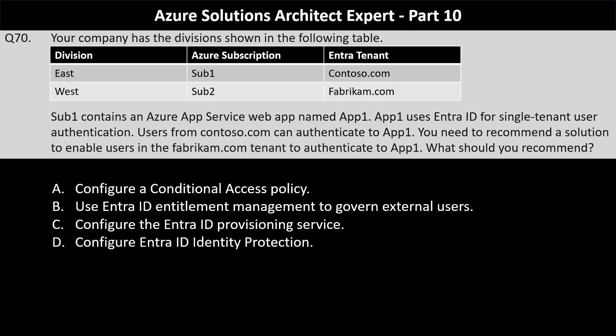Your company has the divisions shown in the following table. There are two divisions named East and West. The East division is hosted in the Azure subscription named Sub One and has an Entra tenant associated with it named contoso.com. The West division uses subscription Sub Two and is associated with the Entra tenant fabricum.com.